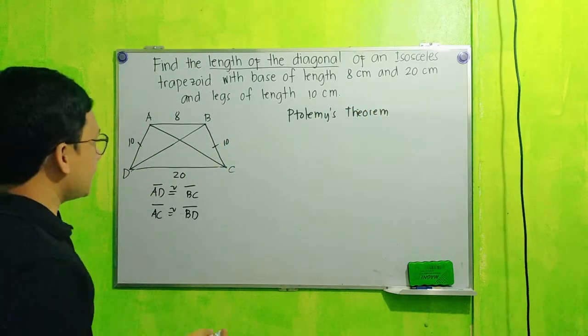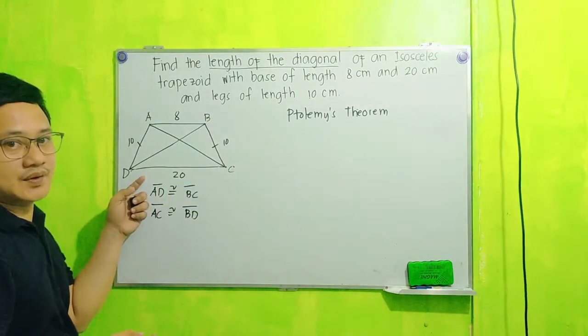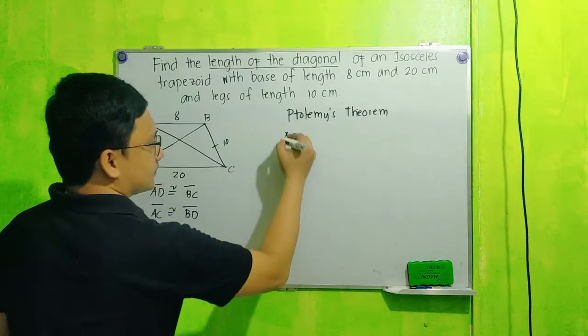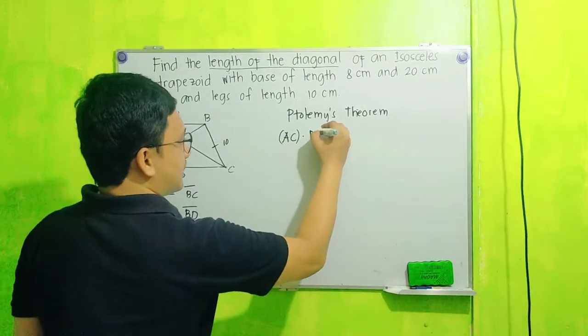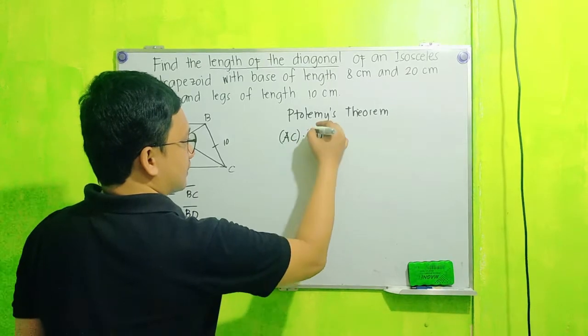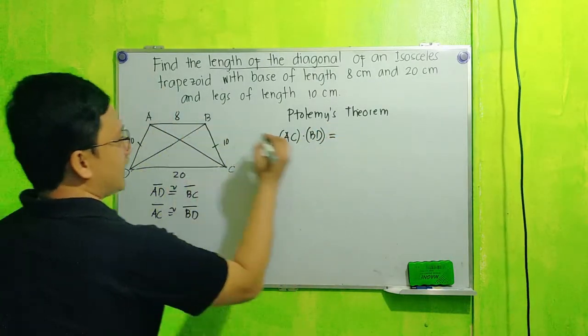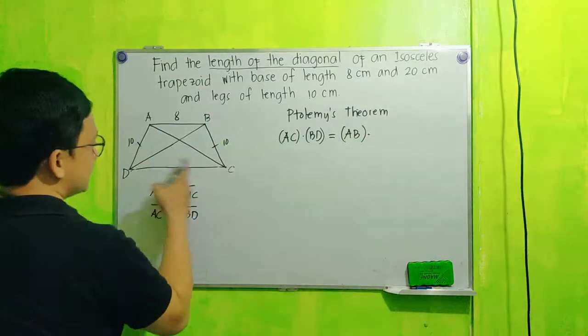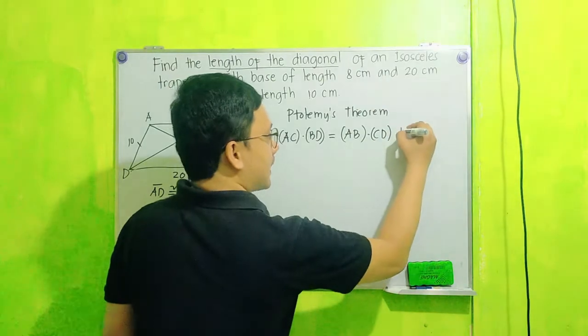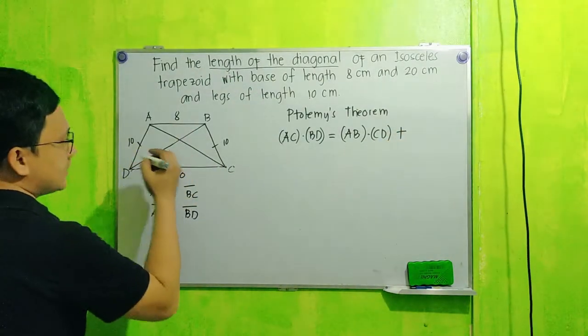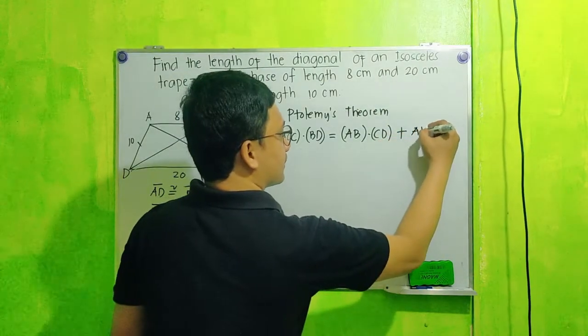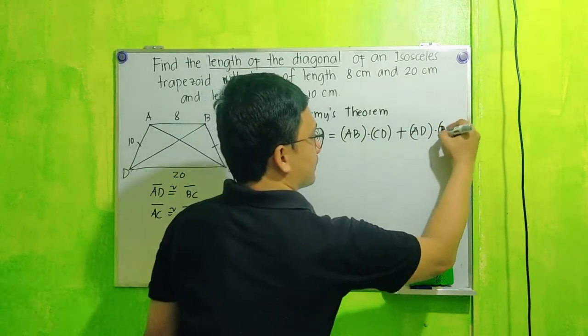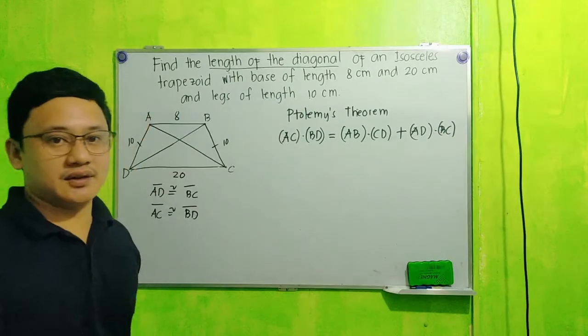For every quadrilateral ABCD, yung AC natin, AC times BD is equal to AB times CD plus AD times BC. Ito yung sinasabi natin yung Ptolemy's theorem.